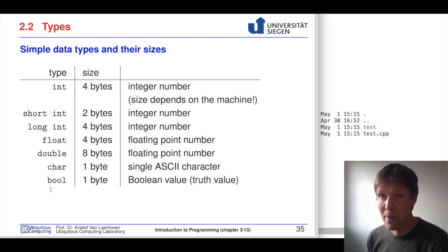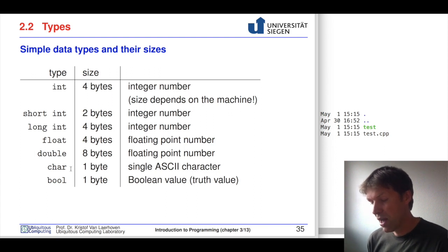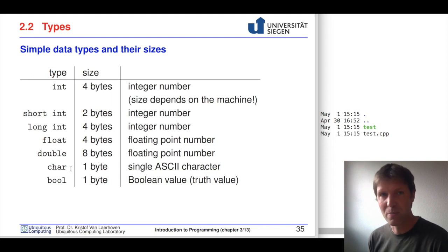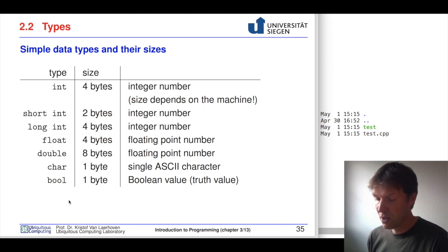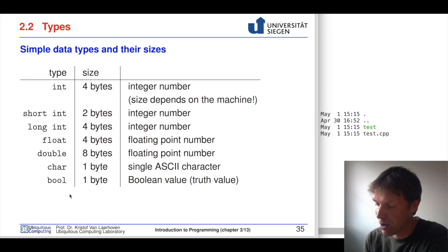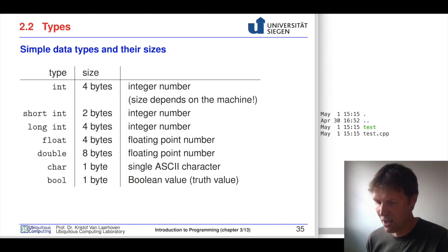There are two more types that reserve only one byte in memory. The first is called a character or char, with one byte. Characters are a special encoding to represent things like '5', 'A', or 'D' — representations that appear on our screens. Then we have a boolean, a truth value — either zero or one. Even though it could fit in one bit, it still takes up an entire byte because memory is organized in bytes; the minimum addressable unit is one byte.